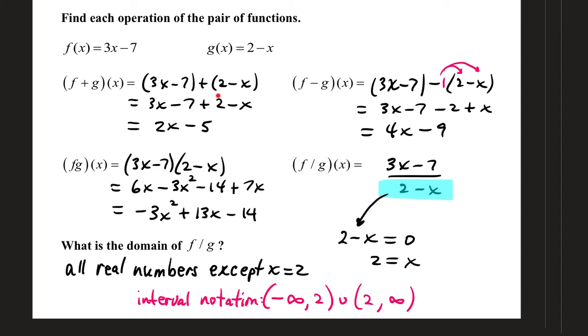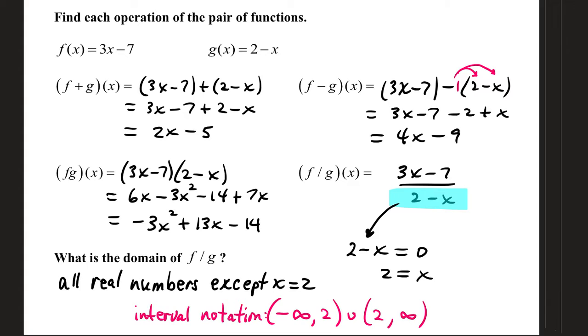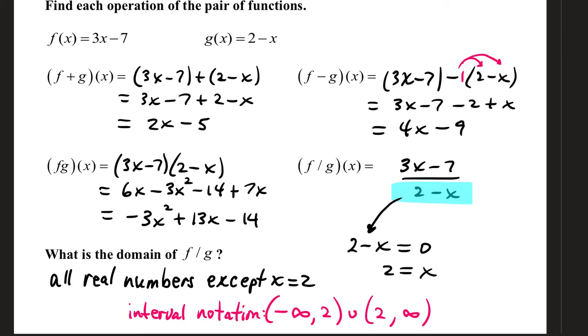When we calculate the difference, 3x minus 7 minus 2 minus x. Remember to distribute the subtract or the minus sign, that's going to be negative 2 plus x. Now we combine like terms: 3x plus 1x is 4x, negative 7 minus 2, that is negative 9.